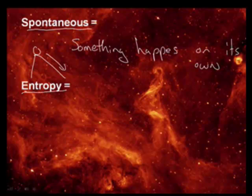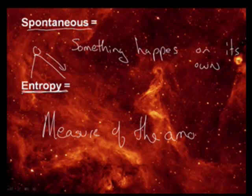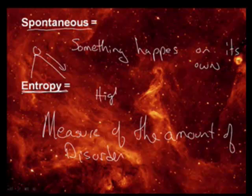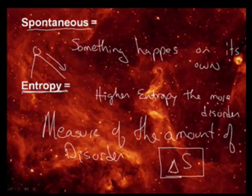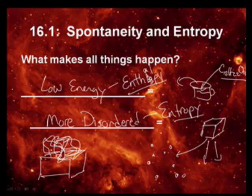We have this concept called entropy. Entropy is a measure of the amount of disorder in a system. Write this down. If you increase entropy, you increase the amount of disorder — the higher the entropy, the more disorder. We're going to identify this with the symbol delta S: delta meaning change, and S is our symbol for entropy. Similarly, enthalpy is delta H. We've seen delta T before — it means change in temperature.